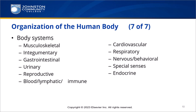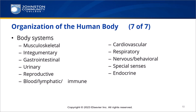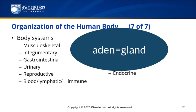The special senses, which are your eyes and ears, are responsible for gathering visual and auditory information. Combining forms here are oculo, meaning eye, and oto, meaning ear. Finally, the endocrine system is responsible for effecting change in the body through the use of chemical messengers termed hormones. The combining form aden means gland.